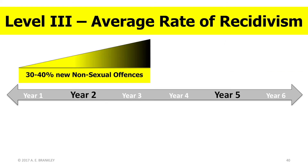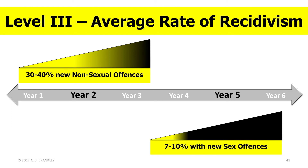Just to be clear about those average rates: for general crime, we are looking at 30–40% with new crimes after two years. That number may seem high, until you remember that this includes drug possession, drug use, theft, driving under the influence, or with a suspended license — all things that can happen very quickly and are not violent in nature. For sexual crime, 7–10% of individuals will be convicted of new offences after five years. Conversely, 90–93% will not.